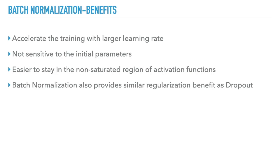So what can batch normalization do? It accelerates training by allowing a larger learning rate. It is not sensitive to the initial parameters. It is also easier to stay in the non-saturated region of activation functions. Batch normalization also provides similar regularization benefits as dropout.